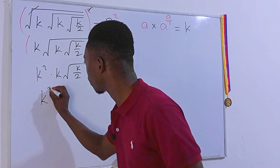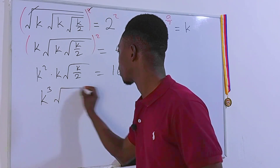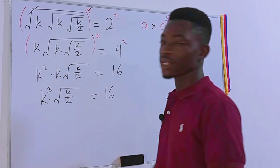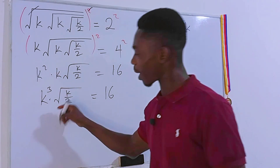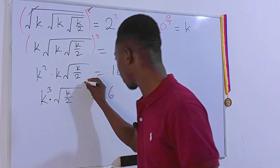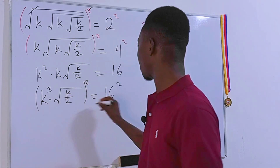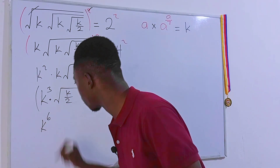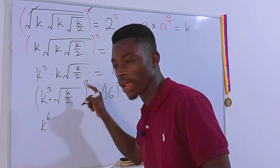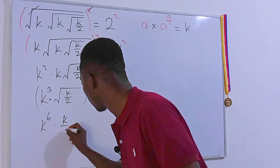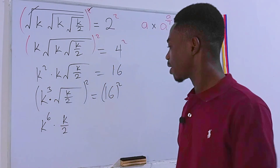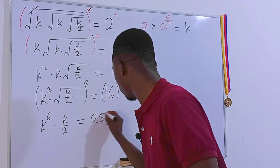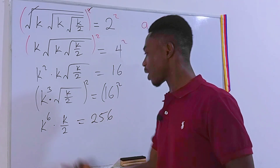k squared times k gives us k to the third power, times the square root of k, divided by 2, and the right side is still 16. We still have a square root, so let's raise each side to the second power once again. We get k to the third power squared, which is k to the sixth power, times k divided by 2 — the square cancels the square root — and the right hand side is 16 squared, which is 256.